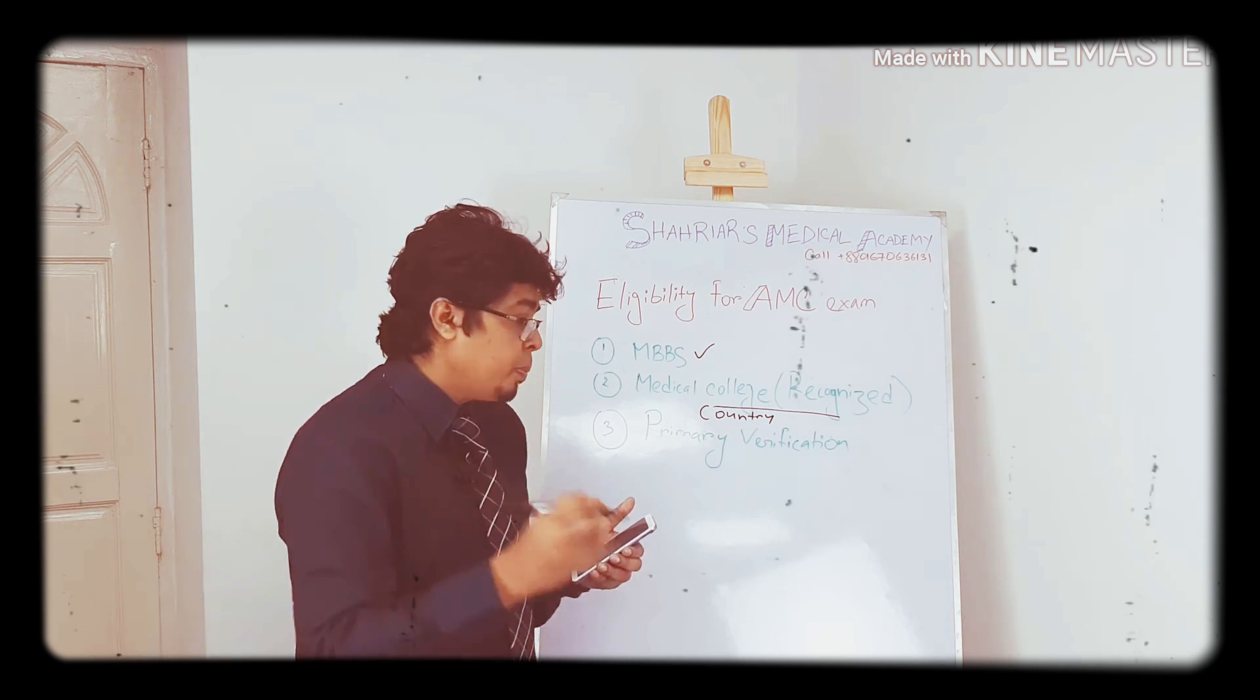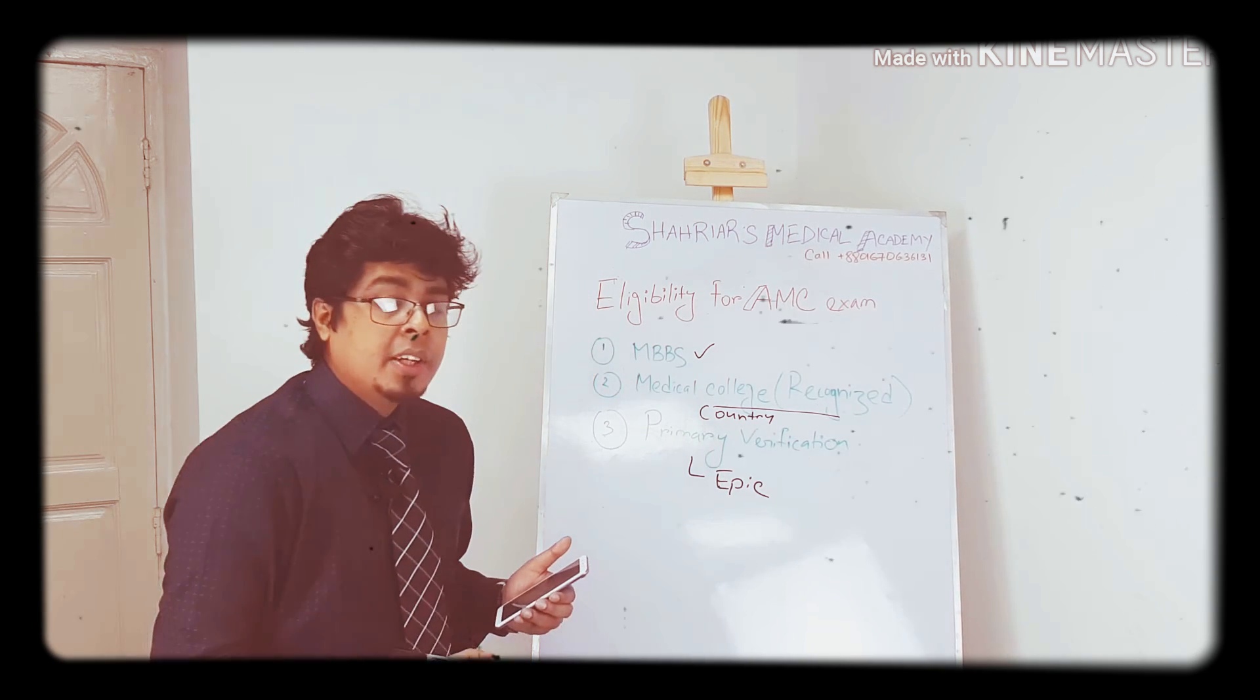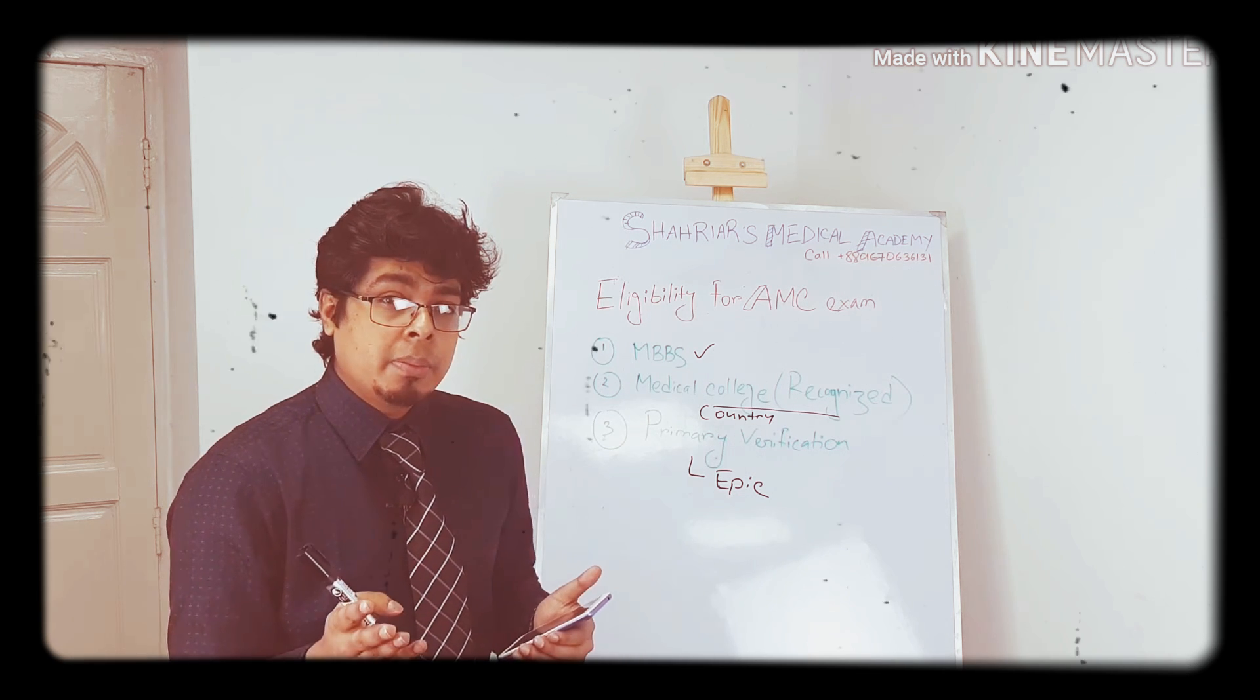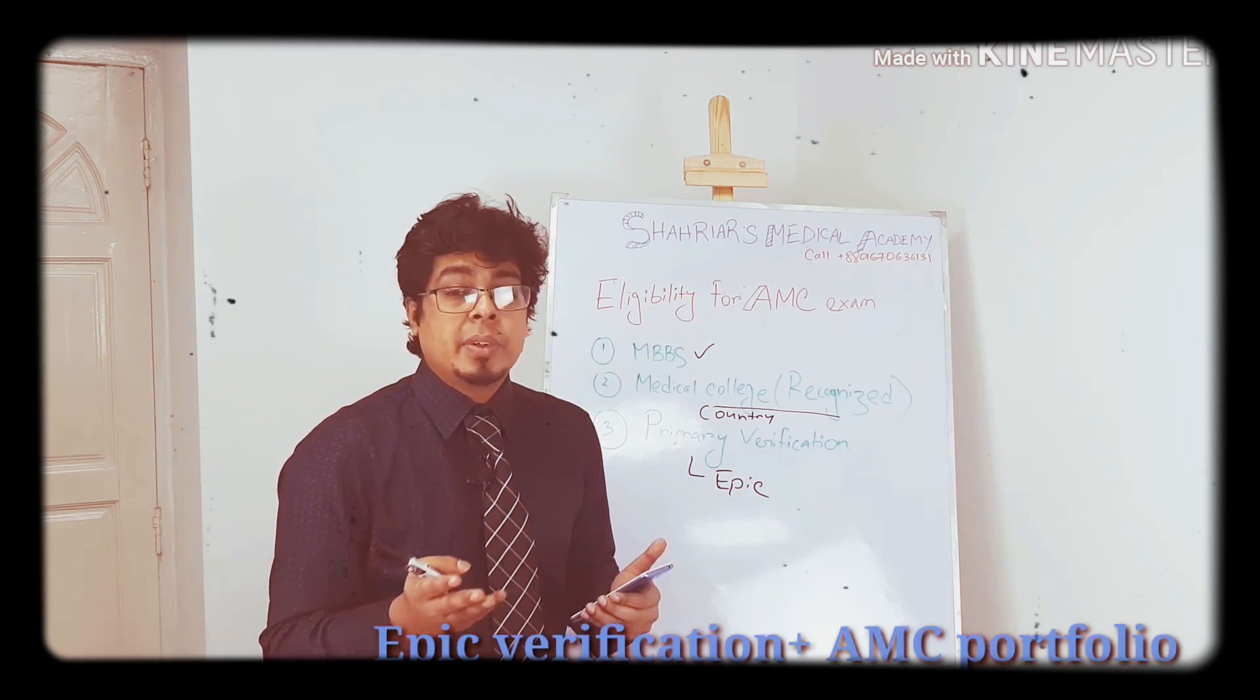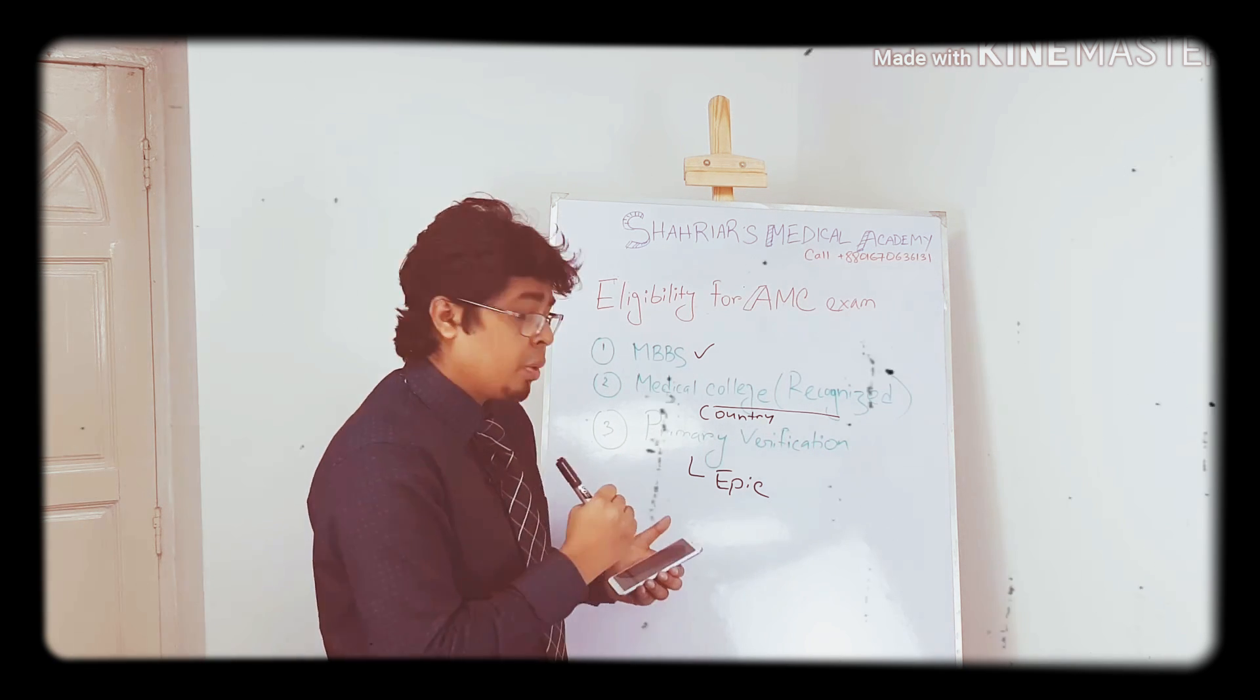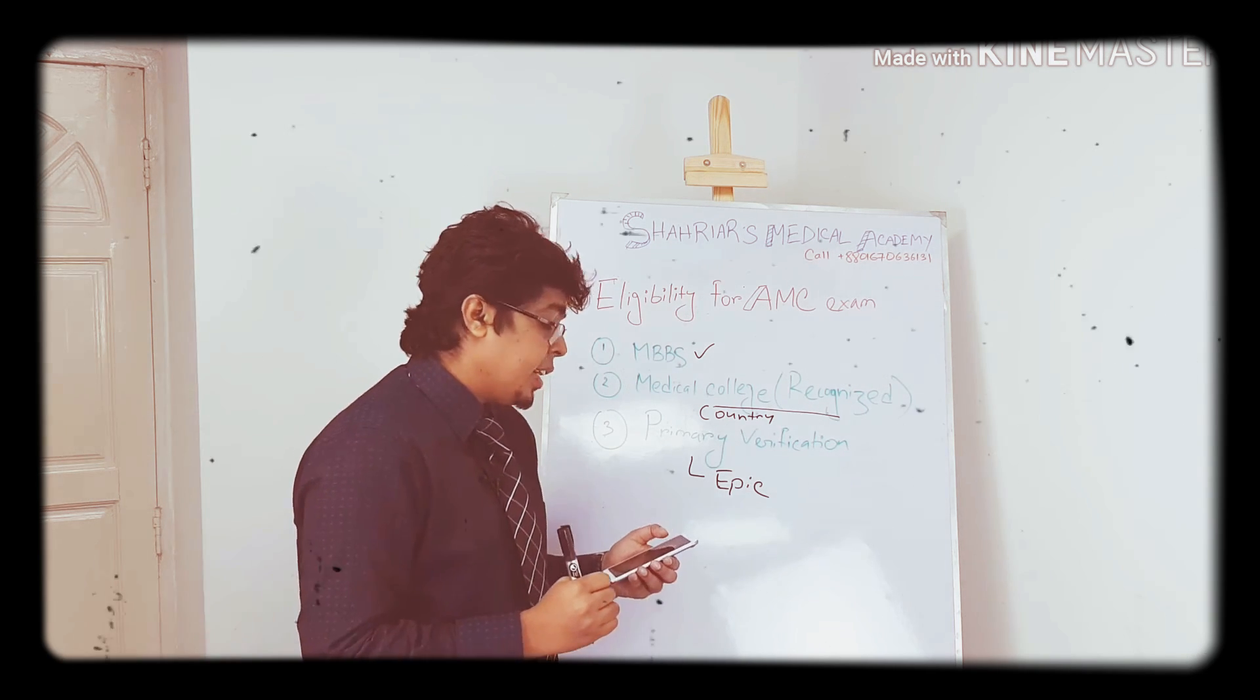Primary verification - many people don't understand this term. But primary verification consists of two periods. One is EPIC verification. EPIC is like, say if you are a doctor from Bangladesh, you are a doctor from India or Pakistan - what is the proof that you are a doctor? You are an international doctor. You have your own country documentation.